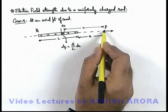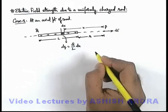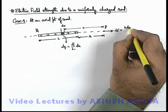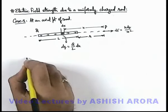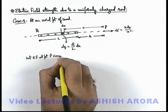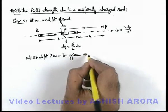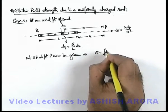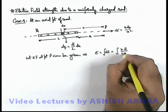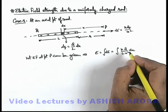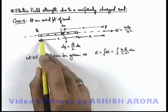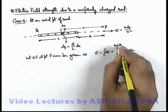Due to this dq, the electric field at point P has a strength dE. This dE can be given by the result of a point charge, that is k·dq/x². So we can write the net electric field at point P as: E = integration of dE = integration of k·(q/l)/x² dx. For this rod, the limits of integration for x are substituted from r to r+l, so this will be integrated from r to r+l.